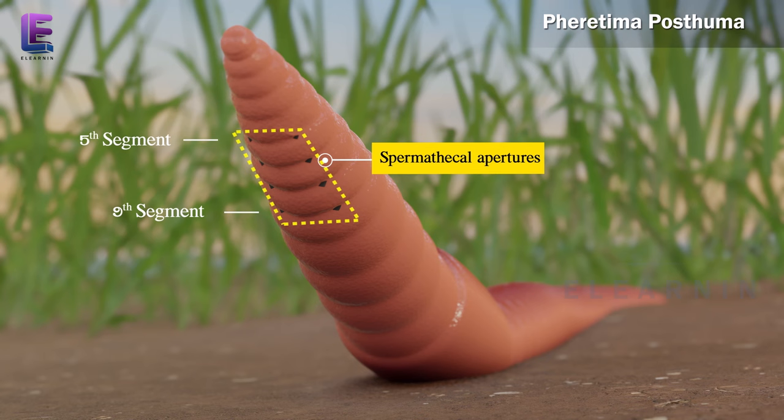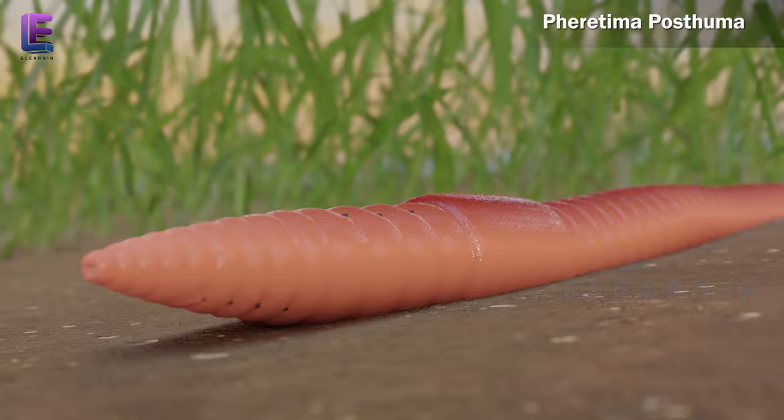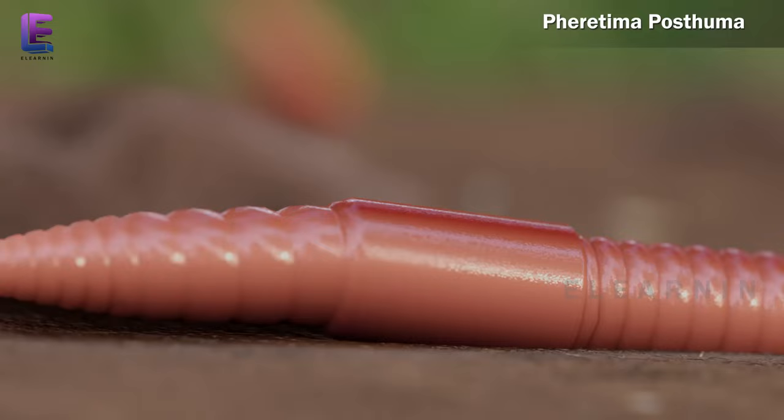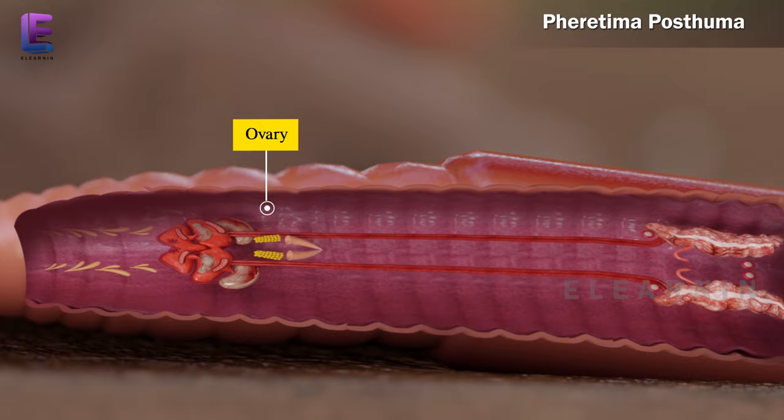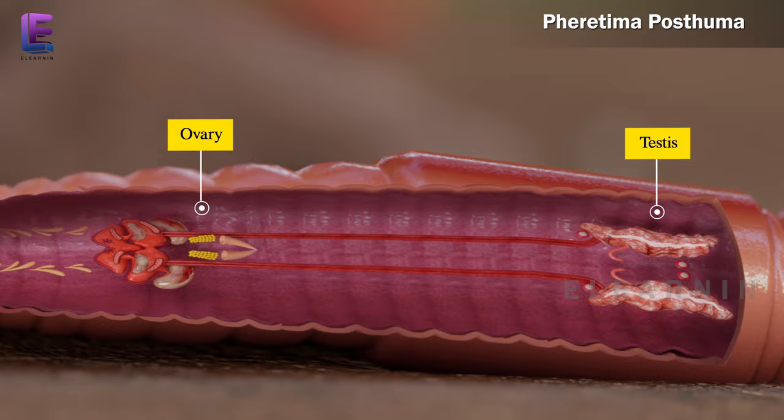Four pairs of spermathecal apertures are situated on the ventrolateral sides of the intersegmental grooves of the 5th to 9th segments. A single female genital pore is present in the mid-ventral line of the 14th segment. A pair of male genital pores are present on the 18th segment.